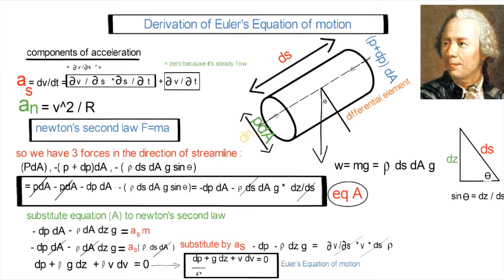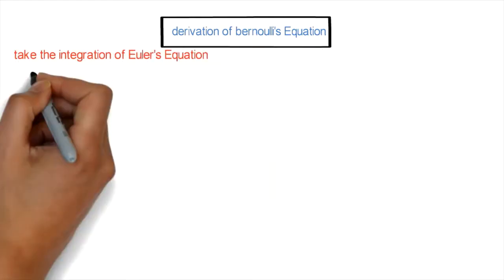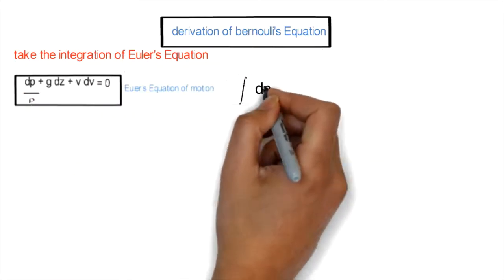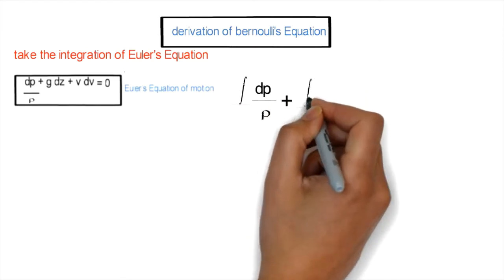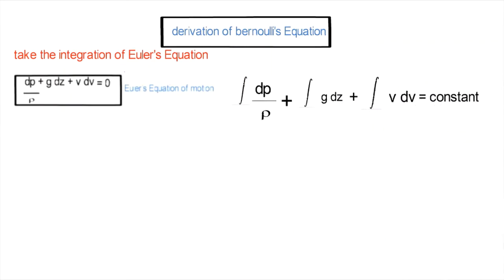Now we want to derive Bernoulli's equation from Euler's equation of motion. It's an easy step — we will integrate Euler's equation to obtain Bernoulli's equation. The integration of Euler's equation gives: integral of dp/ρ plus integral of g·dz plus integral of V·dV equals constant.